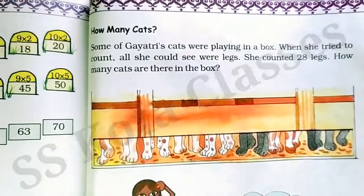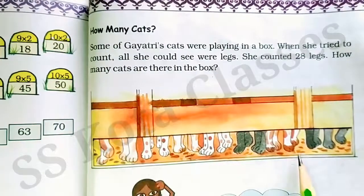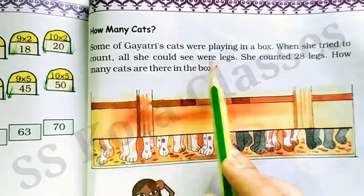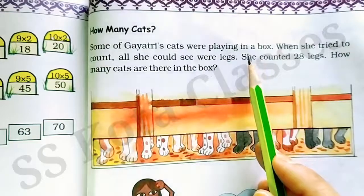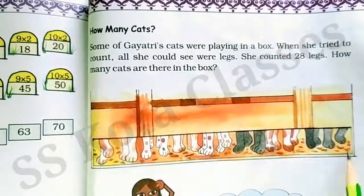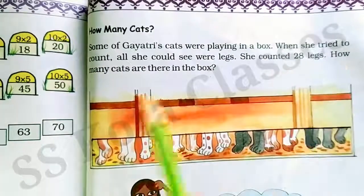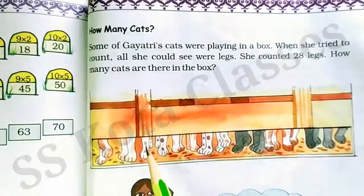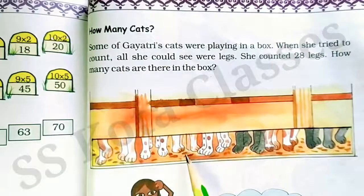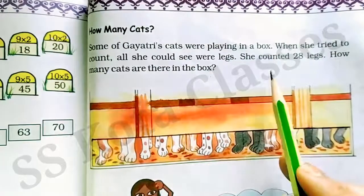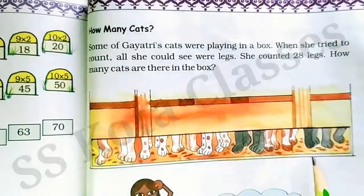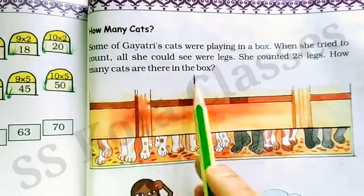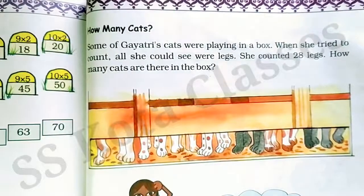कितनी cats हैं? आप देख सकते हैं कि यहां पर कुछ cats के legs नजर आ रहे हैं. Some of Gayatri's cats were playing in a box. तो Gayatri जो एक गर्ल है, उसकी कुछ cats हैं जो की एक box के अंदर खेल रही हैं. When she tried to count all, she could see were legs. जब उसने उन्हें count करने का try किया, तो उसे केवल cats के legs ही दिखाई दे रहे हैं. She counted 28 legs. तो बताएं box में कितने cats हैं?